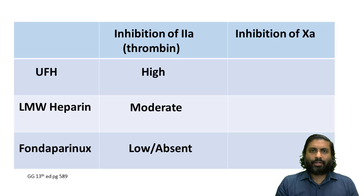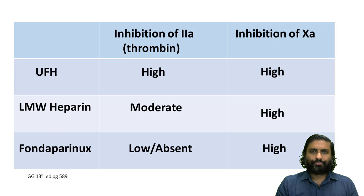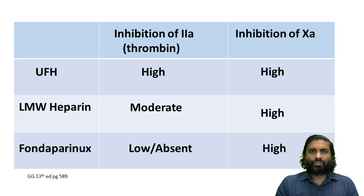Although heparin is classified as an indirectly acting parenteral thrombin inhibitor, the different forms of heparin inhibit thrombin differently. Unfractionated heparin inhibits thrombin very powerfully, while low molecular weight heparin does not inhibit thrombin as powerfully, and fondaparinux does not inhibit thrombin at all. On the other hand, all forms of heparin inhibit factor 10a equally. The basis of this difference in inhibition of factor 2a comes down to the concept of scaffolding.